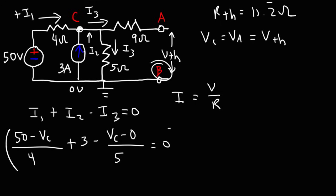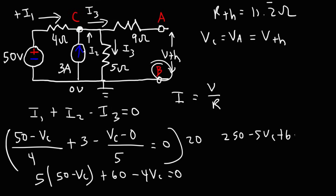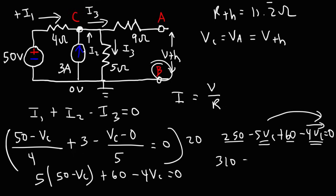Now we solve for Vc. Multiplying both sides by 20: 5 times (50 - Vc) + 60 - 4Vc = 0. Distributing: 250 - 5Vc + 60 - 4Vc = 0. That gives 310 - 9Vc = 0, so 9Vc = 310. Dividing both sides by 9, Vc equals the Thevenin voltage, which is 310/9 = 34.4 repeating volts.